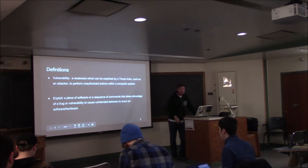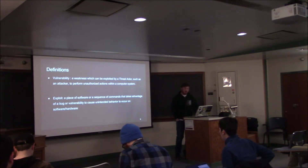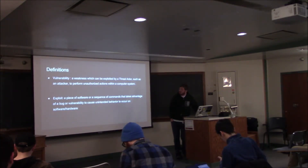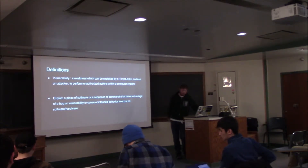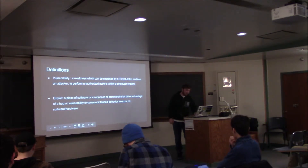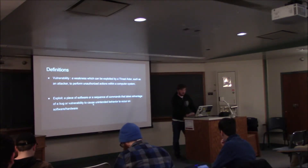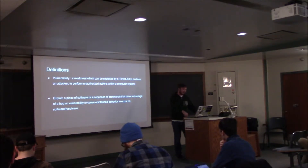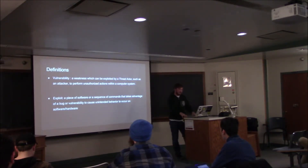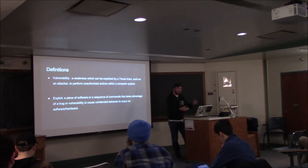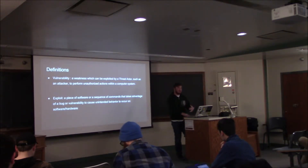A couple definitions I want to get straight first are vulnerability and exploit. These terms are used interchangeably, but they really shouldn't be. A vulnerability is a weakness which can be exploited by a threat actor, such as an attacker, to perform unauthorized actions in a computer system — basically, the actual bug in the code. An exploit is a piece of software or sequence of commands that takes advantage of a bug or vulnerability to cause unintended behavior to occur in software or hardware. So vulnerability is a weakness in code, and exploit is actually taking advantage of it to make bad things happen.